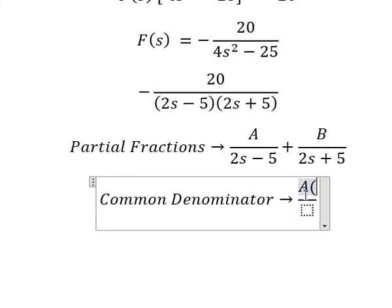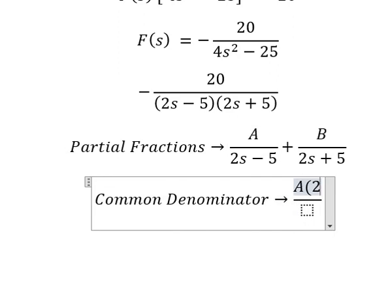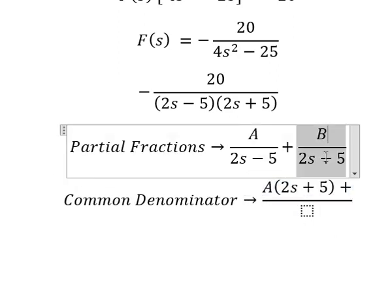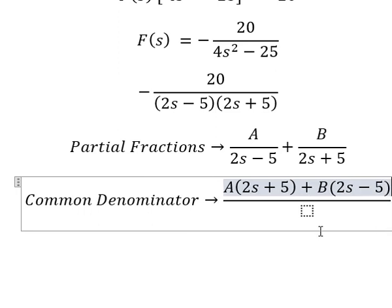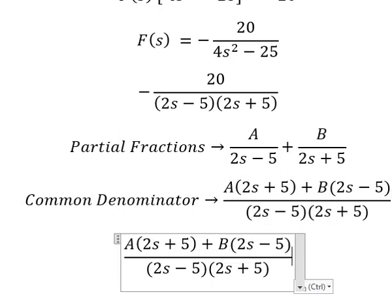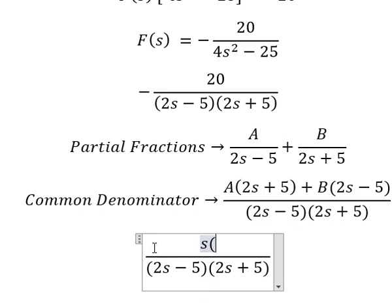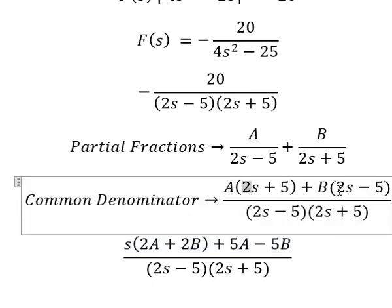Capital A is missing the factor (2s plus 5), so A is multiplied by (2s plus 5). Capital B is missing the factor (2s minus 5), so B is multiplied by (2s minus 5). Arranging by terms in s, we get 2A plus 2B for the s terms and 5A minus 5B for the constant terms.